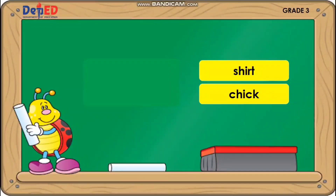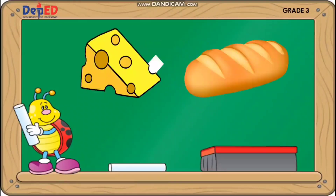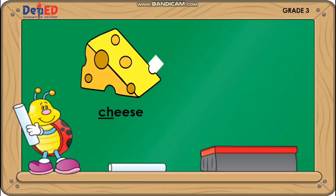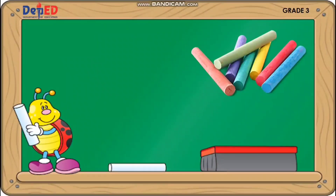For our second activity, which among the two pictures has a consonant digraph? Look at the picture closely. The answer is Cheese. Look at the picture closely. Which picture has consonant digraphs? Brilliant — the answer is Chalk.